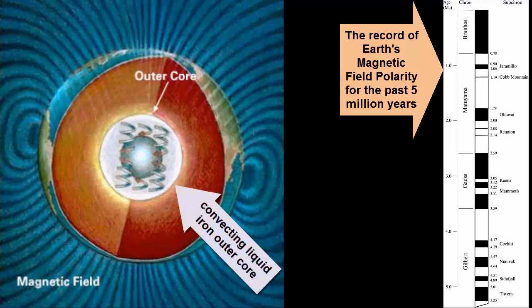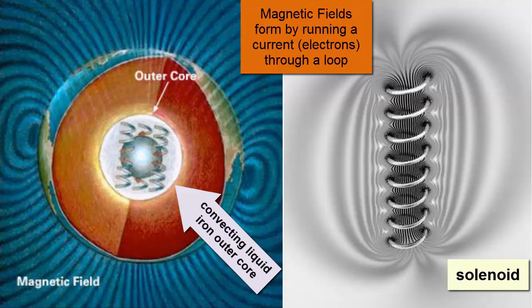It's hot and liquid, so it convects. Because it's a metal, that convection acts very much like a current of electrons moving in a loop, which you'll learn in a basic physics class is one way to produce a magnetic field.